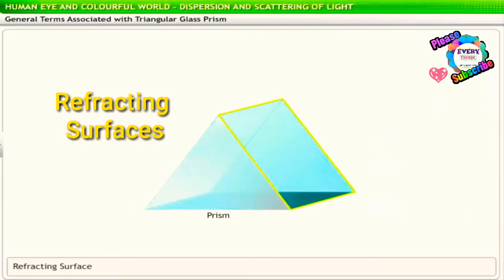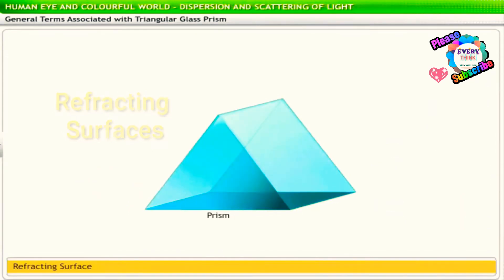The rectangular faces in a triangular glass prism are known as refracting surfaces. The line along which the two refracting surfaces meet is known as the refracting edge of the prism.